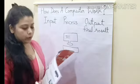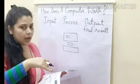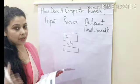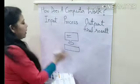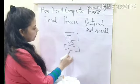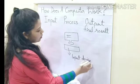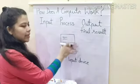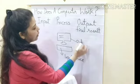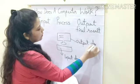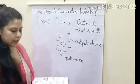Now, this keyboard — through which we enter the data — is called an input device. This is an input device. And the result that is displayed on the monitor — the monitor is called an output device. And the processor, the CPU, does all the processing work.